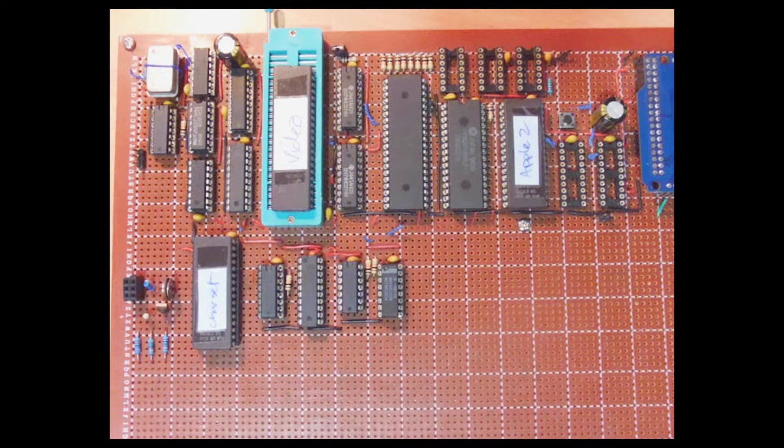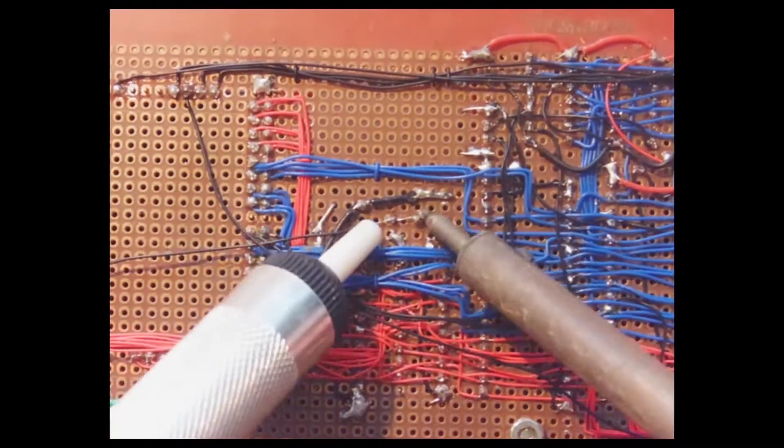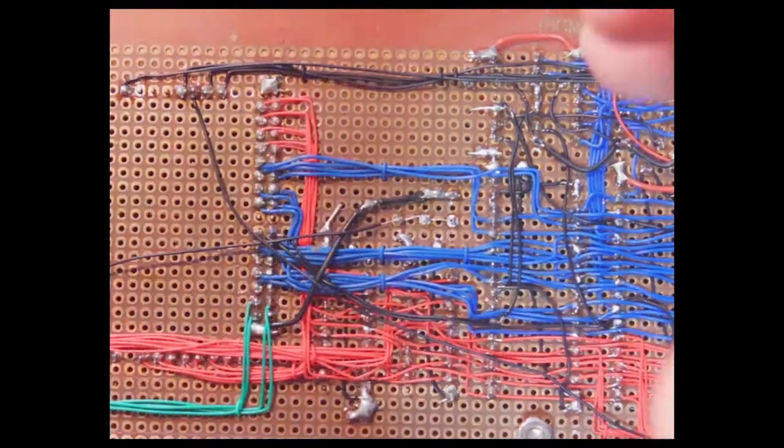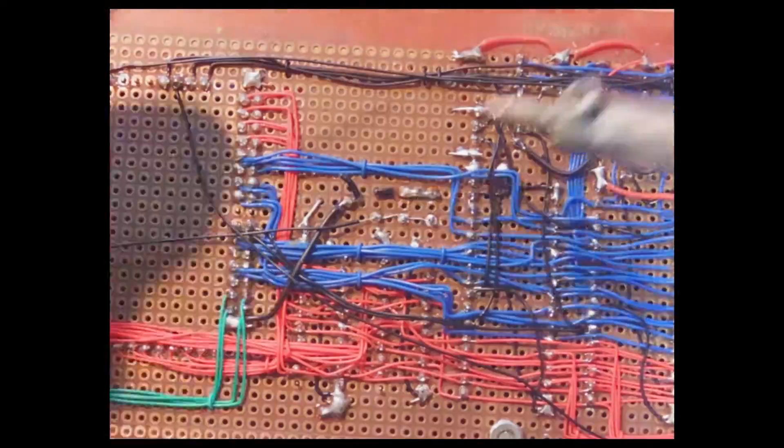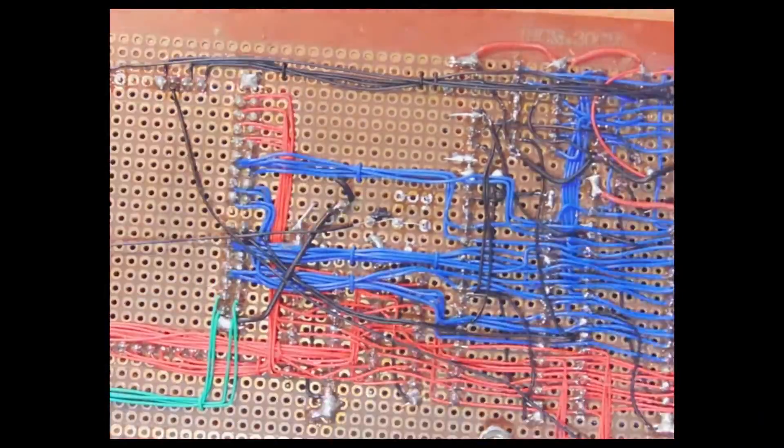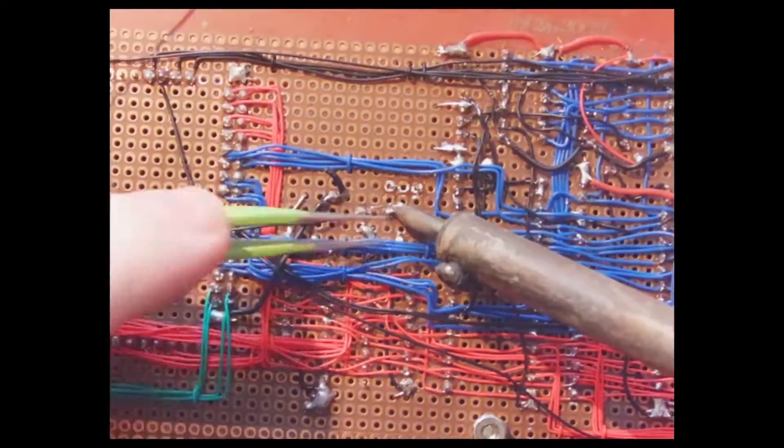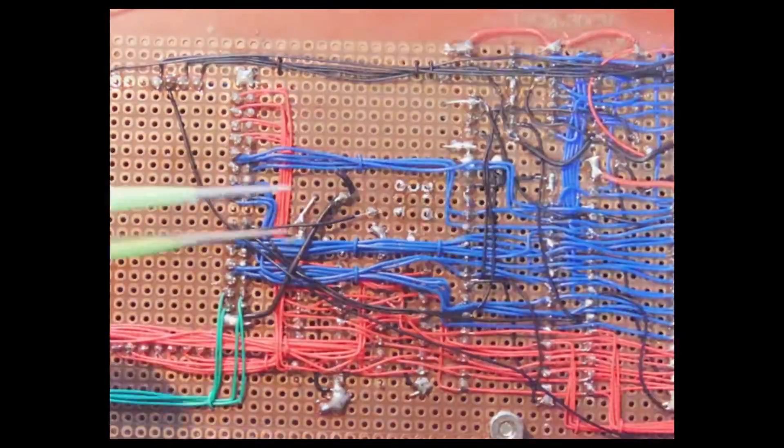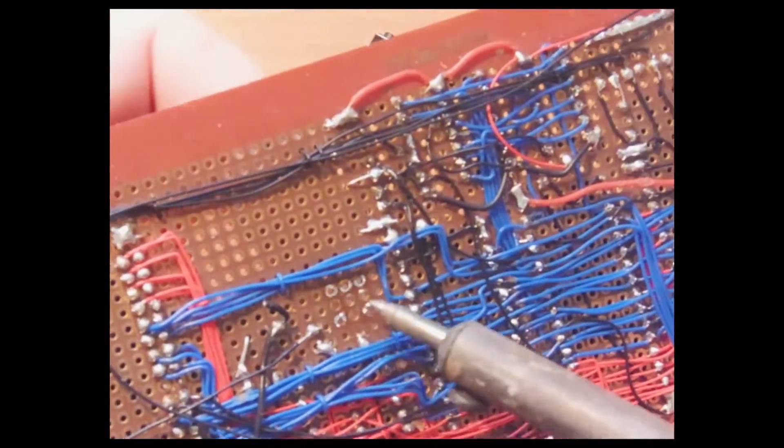This is where we're up to in the build to date. First, I need to move this reset switch. I need this part of the board to place the new 74HC374 I'm going to add to the circuit. This switch is being a bit stubborn. All right, that's got it free.